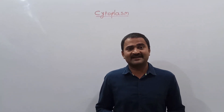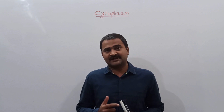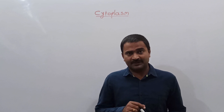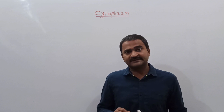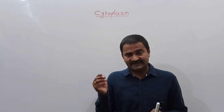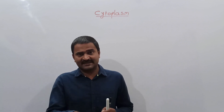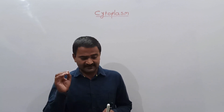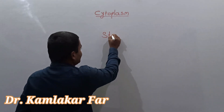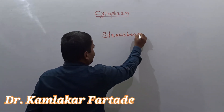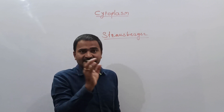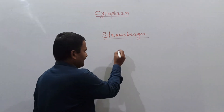Hello students, in today's lecture we are going to discuss the next component of the eukaryotic cell, and that is cytoplasm. Cytoplasm is the material present between the plasma membrane and the nucleus of the cell. The term cytoplasm was first given by a scientist known as Strasburger. So what is cytoplasm? It is the material that is present between the plasma membrane and the nucleus of the eukaryotic cell.